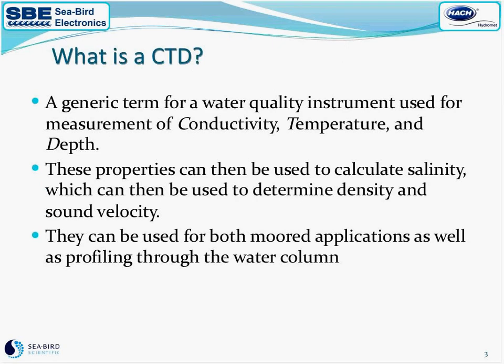Just to make sure we're all on board with the same jargon: what is a CTD? A CTD is a generic term for a water quality instrument used for measurement of conductivity, temperature, and depth. These measured properties are then used to calculate salinity, which then is used to determine density and sound velocity. A CTD can be used for both moored applications as well as profiling through the water column.